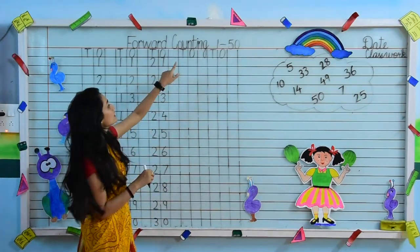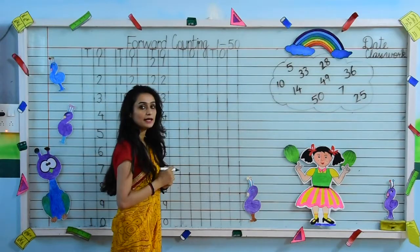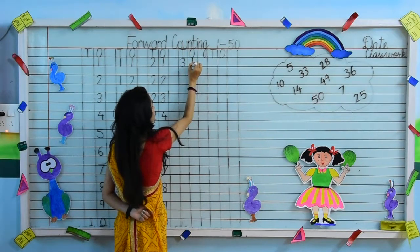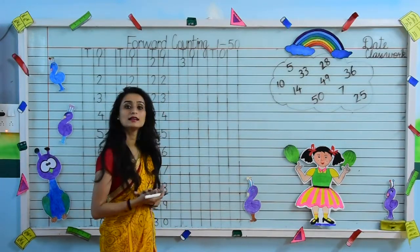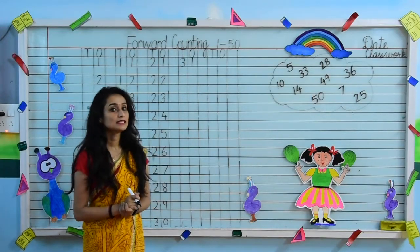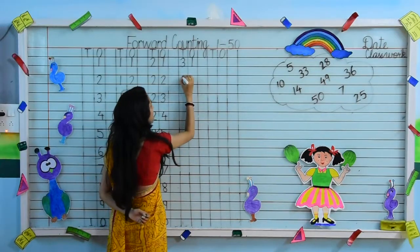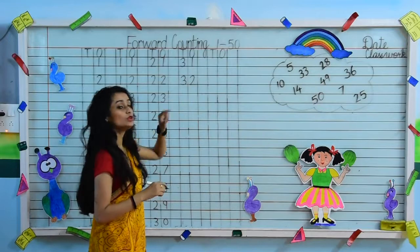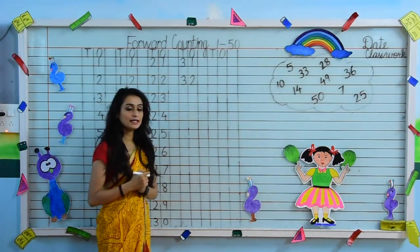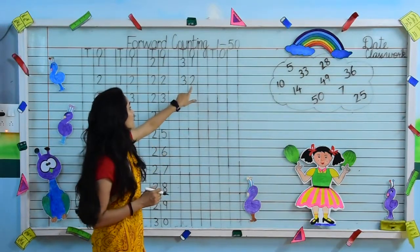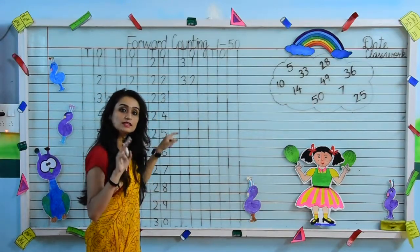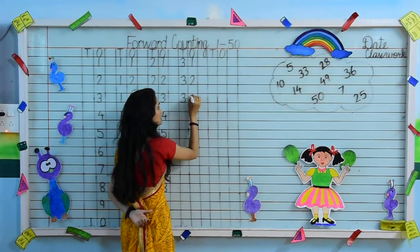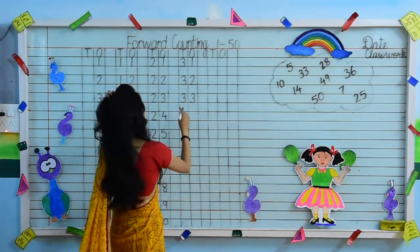After 30, we will go on the next line. Tell me which number to write here. Yes, I have to write 3, 1 — 31. What comes after 31? The next number is 3, 2 — 32. After 2, the next digit is 3. So 3 and 3 together makes 3, 3 — 33.